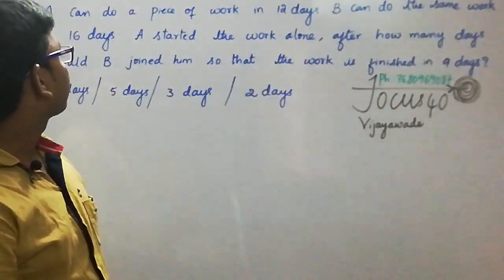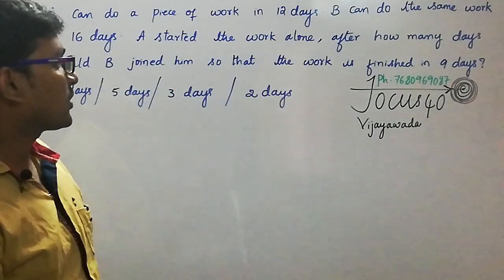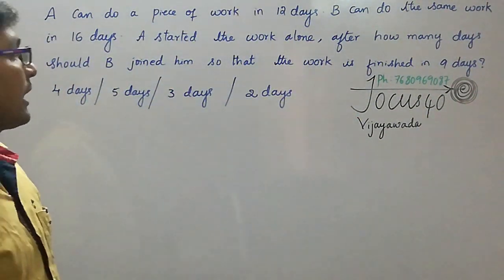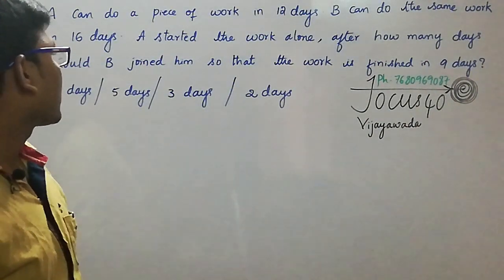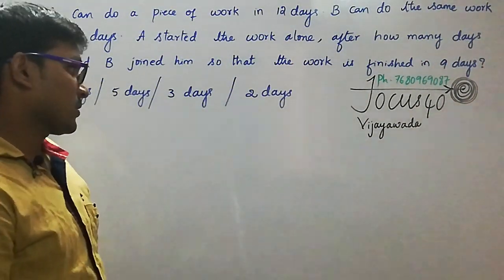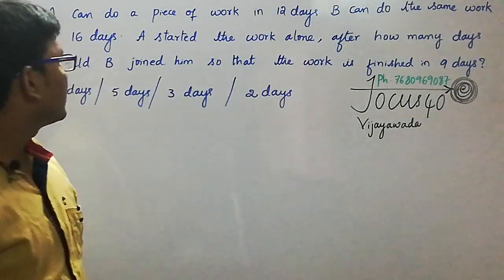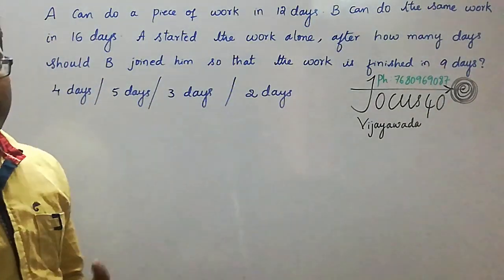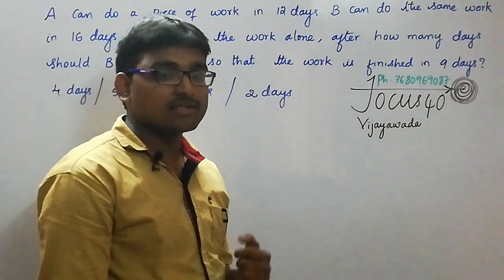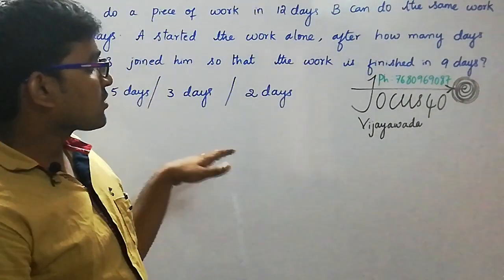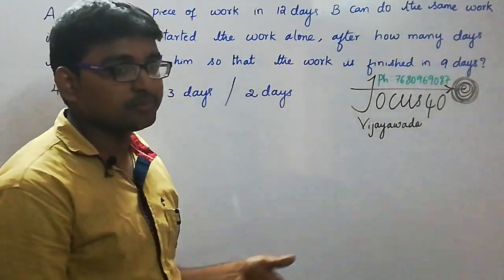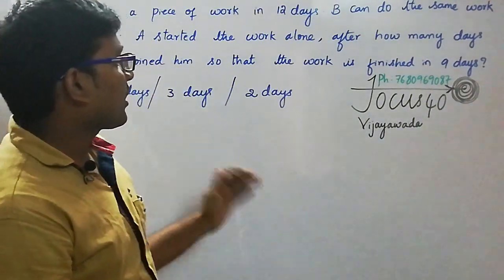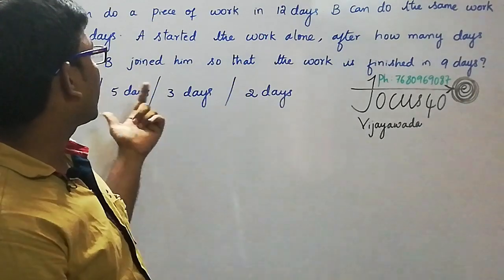First of all we will go through the sum. A can do a piece of work in 12 days, B can do the same work in 16 days. A started the work alone. After how many days should B join him so that the work is finished in 9 days? He is not saying both persons started together — A started alone and after some days B joins him.